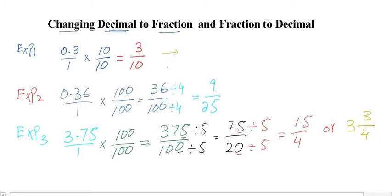We can also do this a different way — a shortcut. For example, with 0.3: rather than multiplying by tens, just consider the decimal means there is a 1 in the denominator. As many digits as there are after the decimal, write that many zeros in the denominator. There is only one digit after the decimal, so write 10. Remove the decimal — what is left is 3 — giving you 3/10. Simplify if possible.